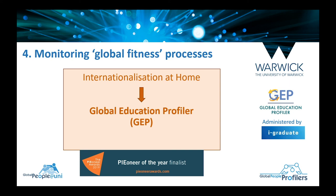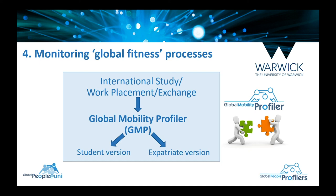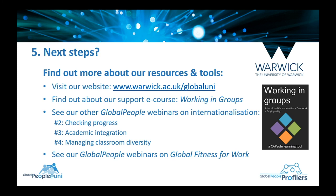We've developed some tools to help monitor that process. One of these is the Global Education Profiler, which won Pioneer of the Year finalist last year and is administered by the firm iGraduate. There is a student version and a staff version. Then we have another tool known as the Global Mobility Profiler, which is particularly for those going on study abroad, some kind of work placement, or exchange — and again, there's a student version and an expatriate version. In the next webinar, I'll be talking more about those two tools.